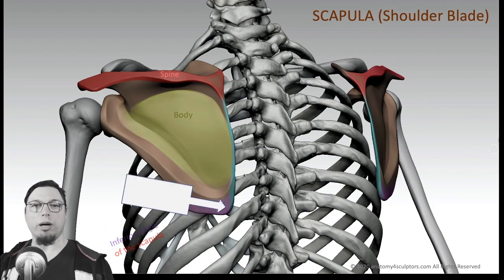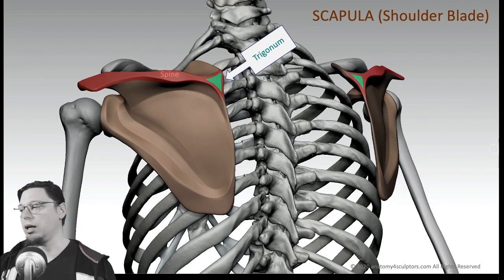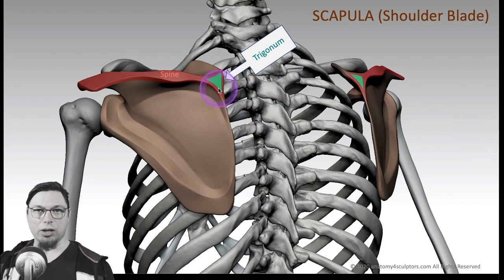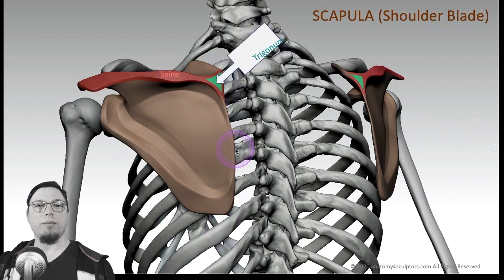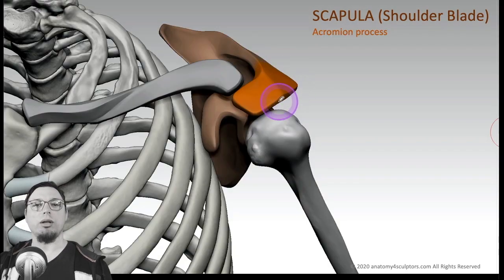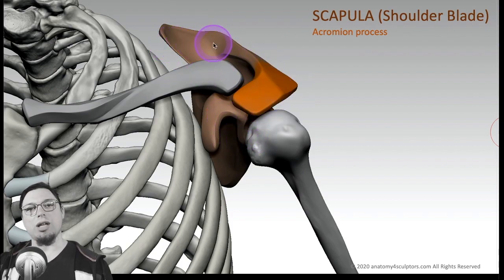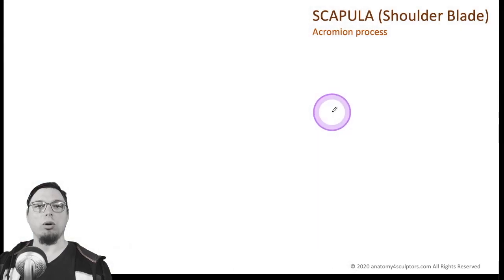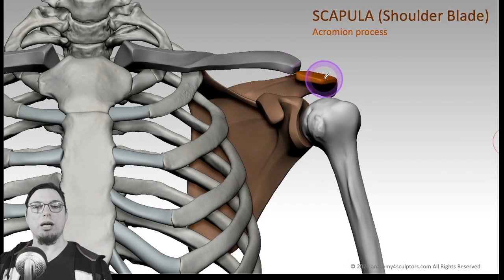Now let's talk about the spine. The spine can be divided into several parts. There is an important bony landmark called the trigonum — a bony triangle where the spine and the medial border meet — and the acromion process. Basically, the acromion is the bony part of the spine which goes around the shoulder. From this top view you can see the spine of the scapula goes around the shoulder, so the scapula takes not only the back part but is also visible from the front. This is the acromion process.